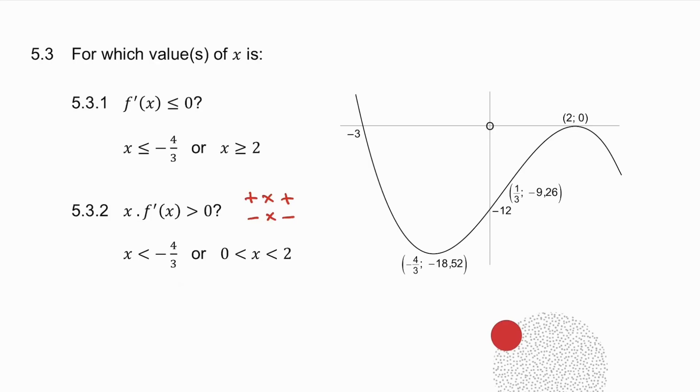If I now consider the positive side of my graph, so where x is positive, in other words, to the right of the y-axis, where, in that part of the graph, is my gradient positive? It's positive there. What are my x values? Well, it's x is greater than 0, less than 2. So there's my answer.